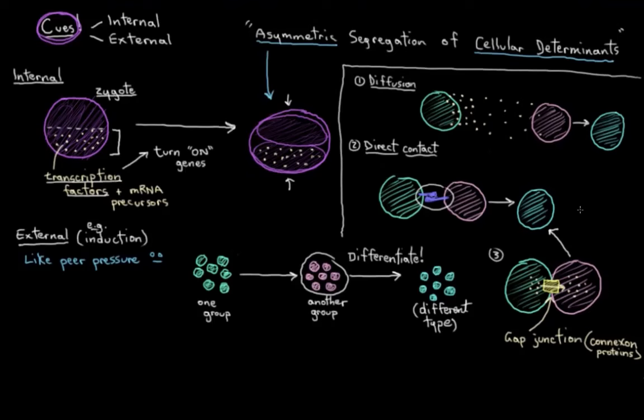Like our limbs are formed partially through induction. And our ears and our eyes and lots more of our body parts are formed through induction in development and embryological development. So induction is really important in cell specialization.